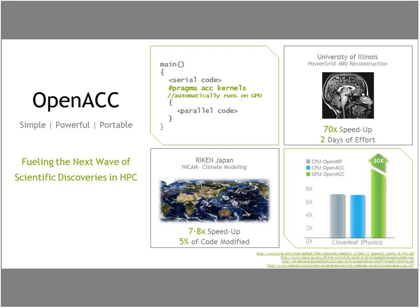Another code is a climate model called NICAM. In this case, they only had to modify about 5% of their code and sped things up by a factor of about 7 or 8x. This is actually a socket-to-socket comparison — running on full CPU nodes versus a CPU plus GPU node — and they got about an 8x performance improvement with a very small amount of effort.